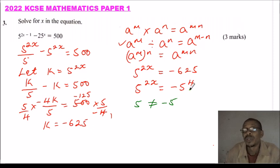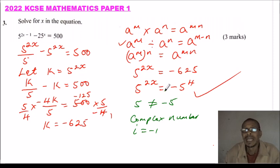So this question goes beyond the scope of KCSE to something that we call complex number. The complex number is when we say i equals -1, but that one you cover in college, so there is no need of us going beyond that.